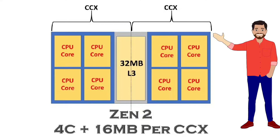Here we have 8 cores and 32 megabytes of L3 cache. But it's actually divided into 2 sets of 4 cores and 16 megabytes of L3 cache. This means each set of 4 cores has direct access to its own 16 megabytes of L3 cache separately.